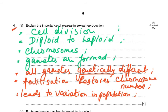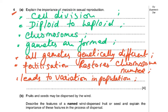Question 4: explain the importance of meiosis in sexual reproduction. Meiosis is a form of cell division in which the chromosome number is reduced to half — diploid to haploid — resulting in the formation of gametes. All gametes are genetically different because we don't know which chromosome of each pair goes into each gamete. Fertilization restores the chromosome number, resulting in variation in the population.